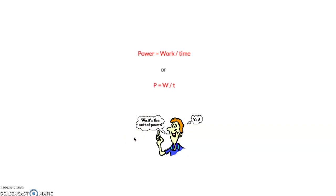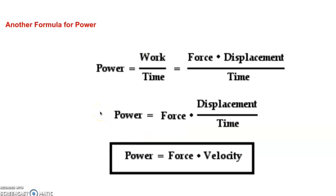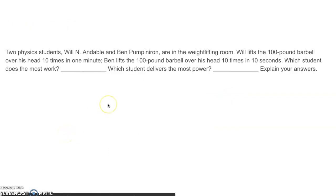So another formula we could use for power: power's work over time, which is the same as work is force times displacement over time. If we pull force out, we got power is force times displacement over time. Displacement over time is velocity. Power is force times velocity.